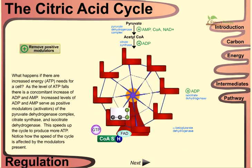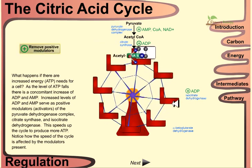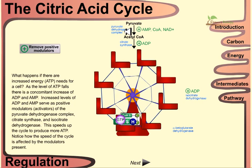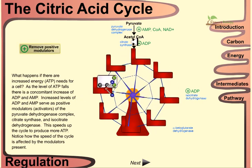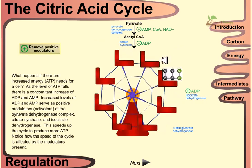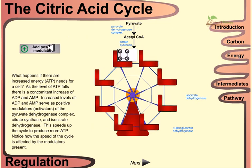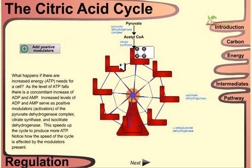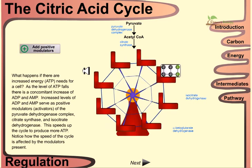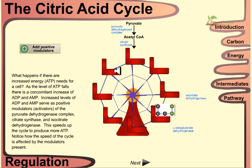Notice how the speed of the TCA cycle is affected by the modulators present. Positive modulators such as AMP, coenzyme A, and NAD+ activate the pyruvate dehydrogenase complex, citrate synthase, and isocitrate dehydrogenase. If the positive modulators are removed, the reaction proceeds much more slowly because ATP is already present and does not need to be produced.